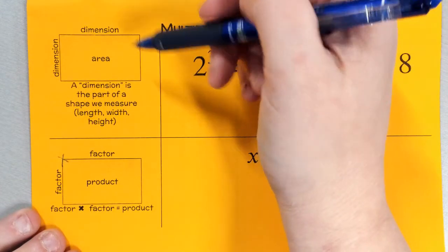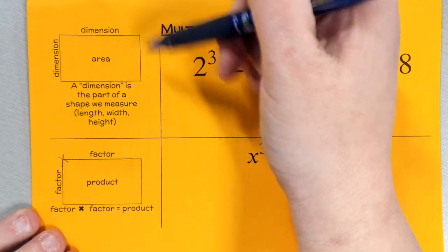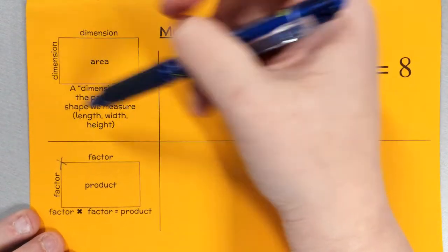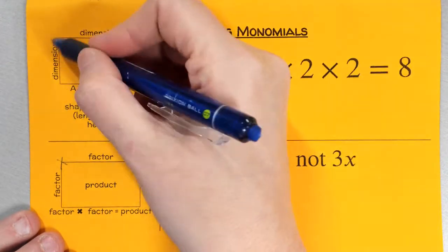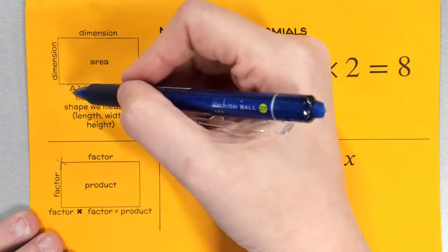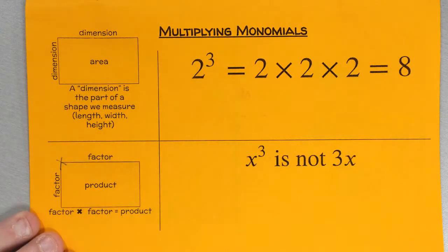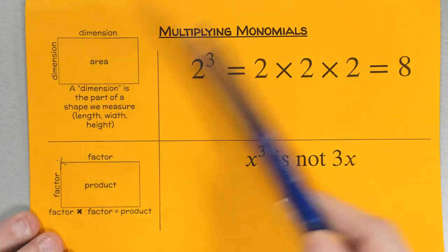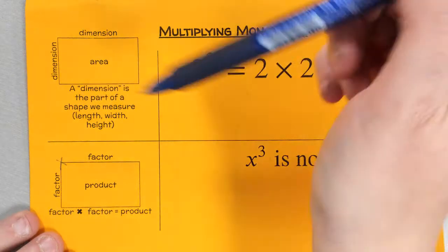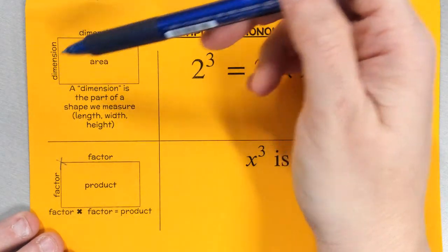In a real-world application — and one of our most common real-world applications of multiplying polynomials and binomials is area — instead of calling the sides factors, we call those dimensions. Dimensions are the parts of shapes that we measure. Like for example, my classroom is about 18 bricks by 20 bricks — something we measure: length, width, height.